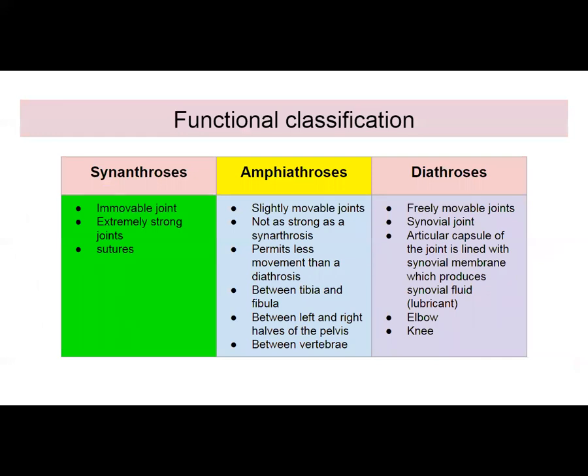Synarthroses are immovable — they don't move, which is why they're considered extremely strong. Examples of synarthroses are sutures, like the fusion of bones in your skull. Amphiarthroses are slightly movable, and because of that they're not as strong as synarthroses but permit less movement than diarthroses. You'll find these between the tibia and fibula, between the left and right halves of the pelvis, and between the vertebrae.